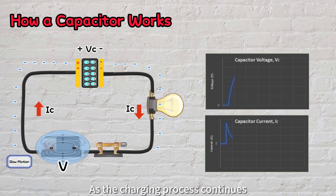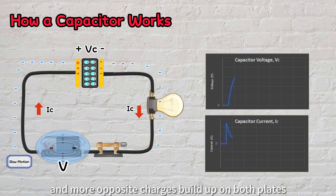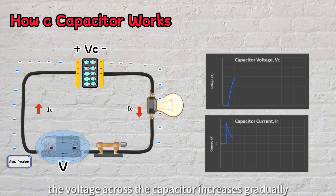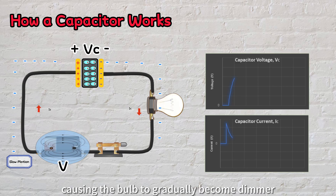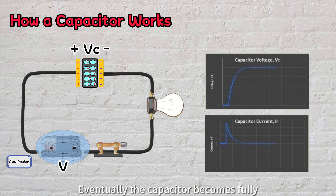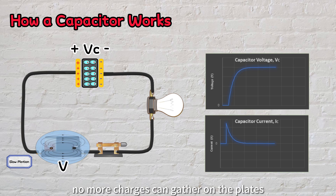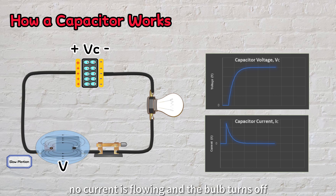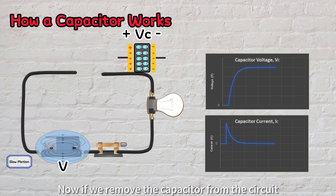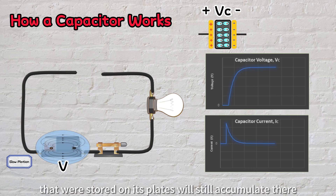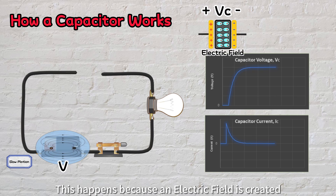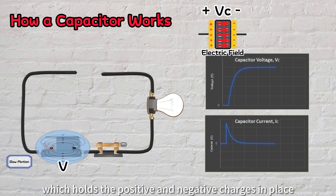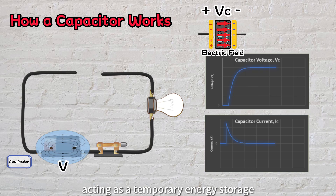As the charging process continues and more opposite charges build up on both plates, the voltage across the capacitor increases gradually. At the same time, the current decreases, causing the bulb to gradually become dimmer. Eventually, the capacitor becomes fully charged when it reaches the same voltage as the source. At this point, no more charges can gather on the plates, no current is flowing, and the bulb turns off. If we remove the capacitor from the circuit, the charges that were stored on its plates will still accumulate there, because an electric field is created between the plates which holds the positive and negative charges in place, acting as a temporary energy storage.